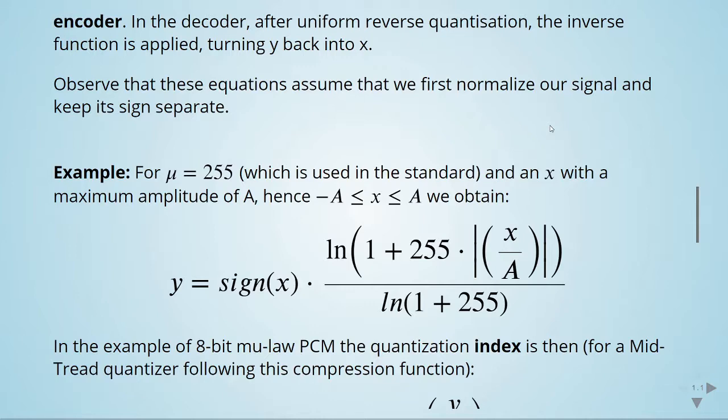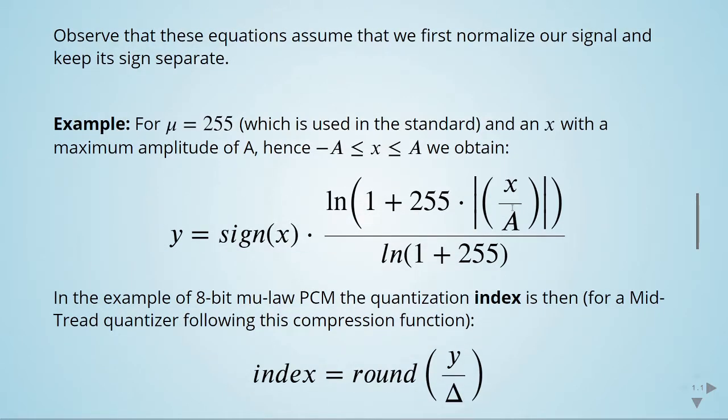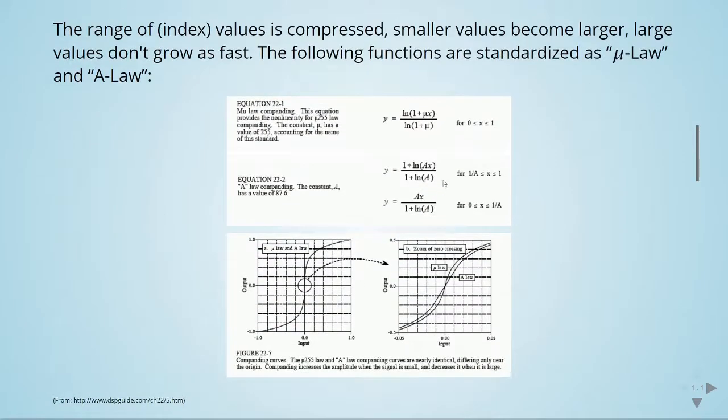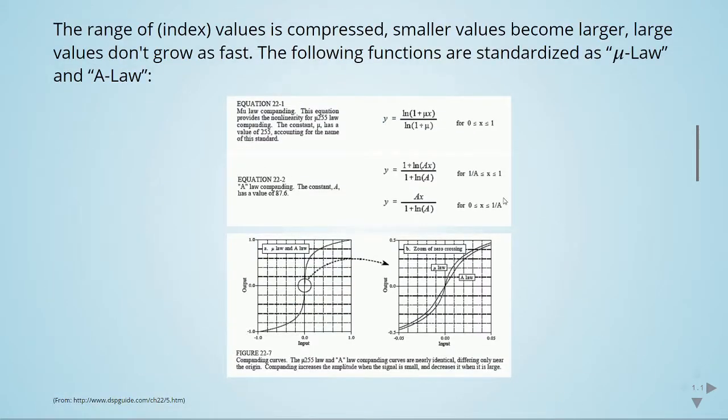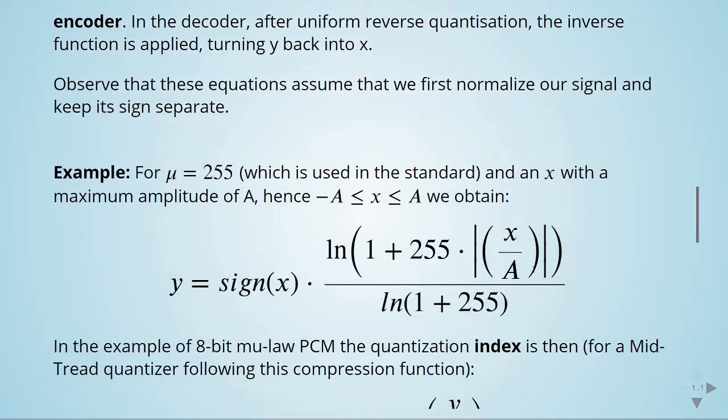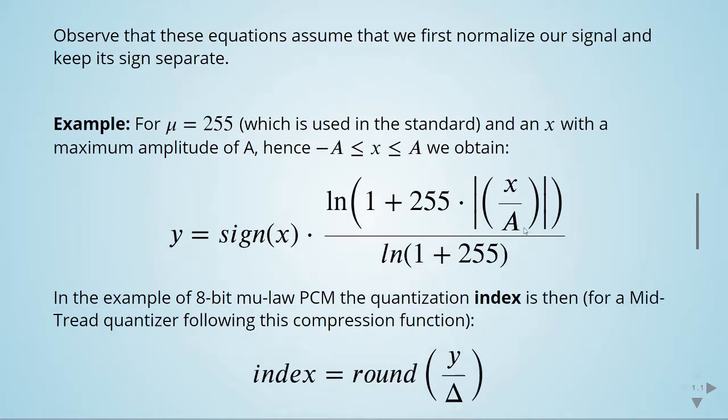We obtain this equation here, so we are keeping the sign separate. Here we are just applying this when mu is equal to 255, and here x, we are doing some kind of normalization.